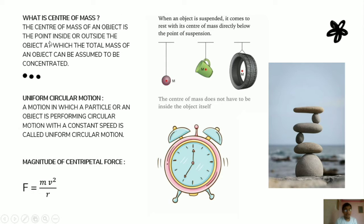The center of mass of an object is the point, inside or outside the object, at which the total mass of an object can be assumed to be concentrated. So it is a point for any object — either inside or outside the object — at which all the mass of that particular object is going to be concentrated.